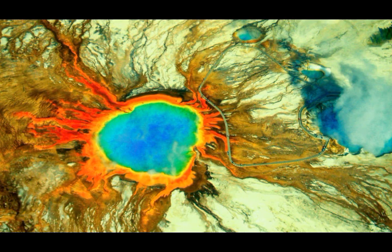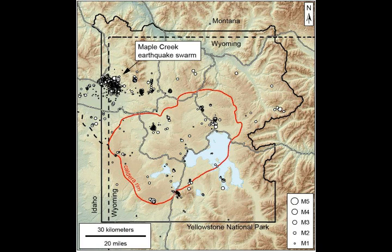Just as areas outside the park boundary can still be part of the supervolcano, so what caused these earthquakes? It's known as the 2017 Maple Creek earthquake swarm — one of the most persistent earthquake swarms observed in the western edge of the park. The main episode lasted more than three months, produced thousands of earthquakes, and while most were very small, a few were large enough to be felt in the area.